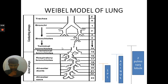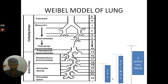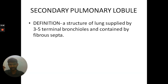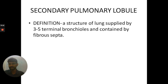The part of the lung distal to the terminal bronchiole includes respiratory bronchioles, alveolar ducts, and alveolar sac — that is the acinus. The part of the lung distal to the respiratory bronchiole, which includes only alveolar ducts and alveolar sac, is the primary pulmonary lobule. The secondary pulmonary lobule is defined as the structure of the lung supplied by 2 to 5 terminal bronchioles and contained by fibrous septa.